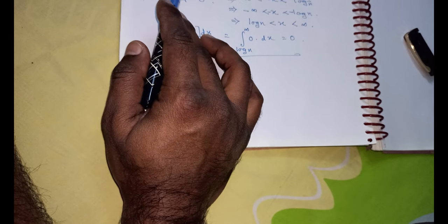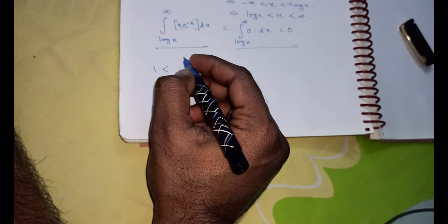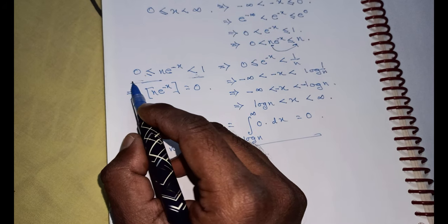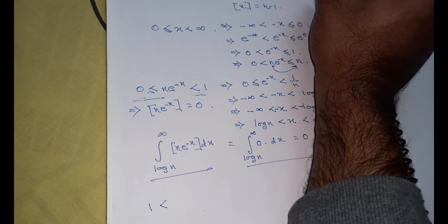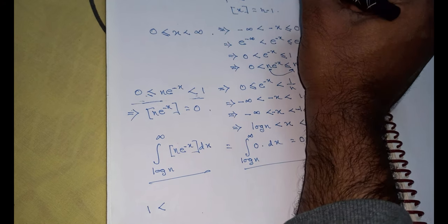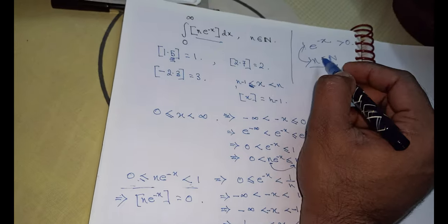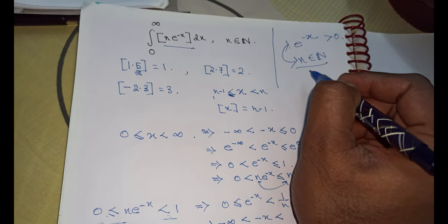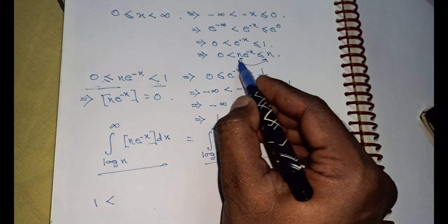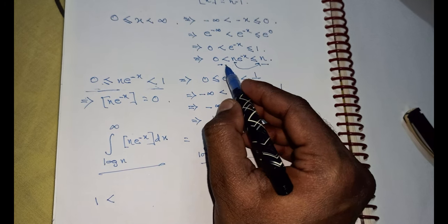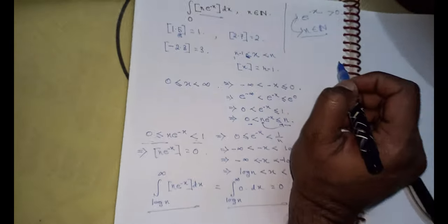Now let's come to the next interval where the value lies between 1 and 2. One might ask why I am starting from 0 and not including the negative part. The answer is that e to the power minus x is always greater than 0, and n belongs to the natural numbers, so it is a positive number. The product of two positive numbers is again positive. Also, we found that n times e to the power minus x lies between 0 and n, so this is conclusive.